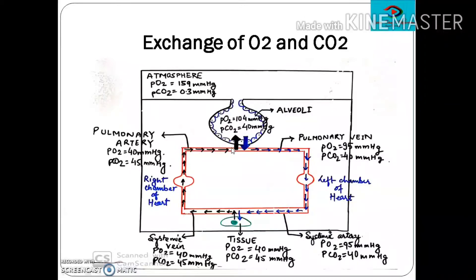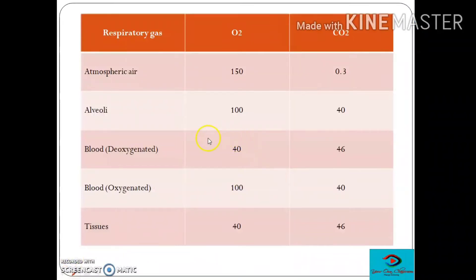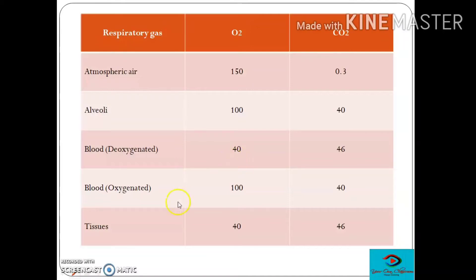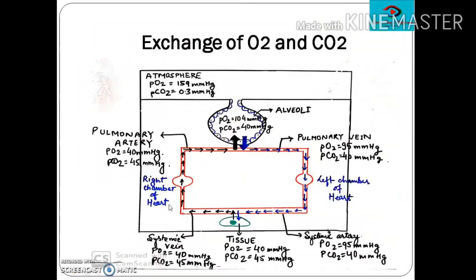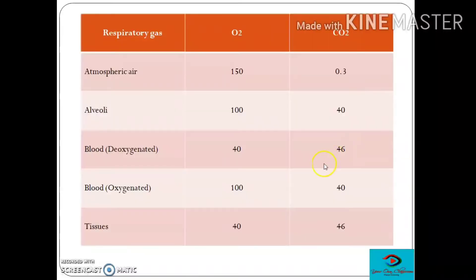So that is the exchange system. If we look at other books besides the NCERT, the values of partial pressure may differ. For example, atmospheric PO₂ is listed as 150 mmHg in some books, alveolar PO₂ as 100 mmHg (we showed 104), deoxygenated blood PO₂ as 40 mmHg (same as ours), oxygenated blood PO₂ as 100 mmHg (we showed 95), and tissue PO₂ as 40 mmHg (same). So you may find these values in other books.